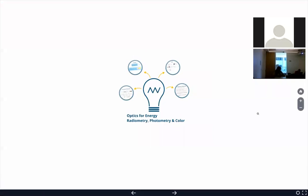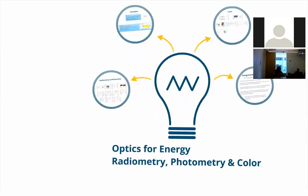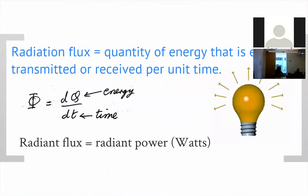Photometric units are different from radiometric units, and we need to understand this distinction. In non-imaging optics — when designing a daylighting system, automobile lighting, traffic lights, and so on — you need to understand how the human eye relates to light, which is why photometry is important. We'll also talk about color. The key point is that the units, quantities, and terminology are all different from what we're familiar with.